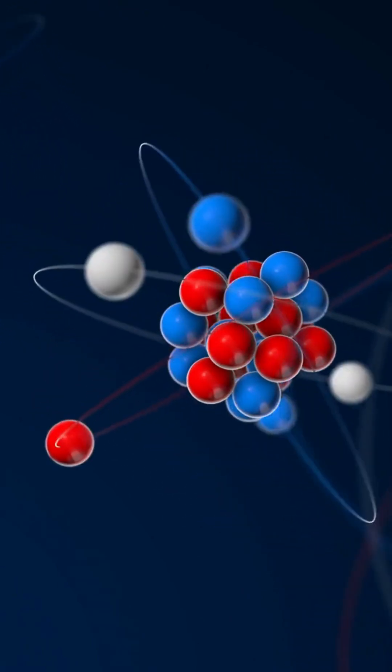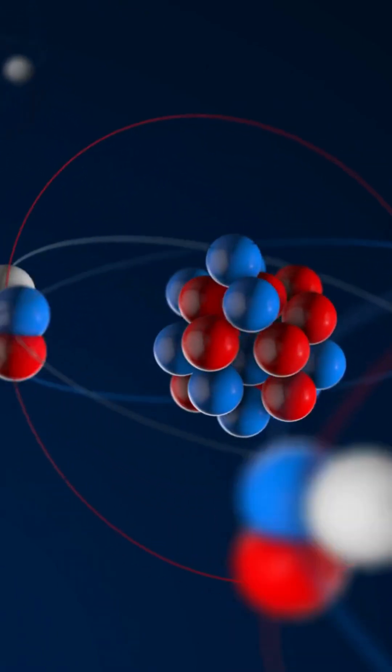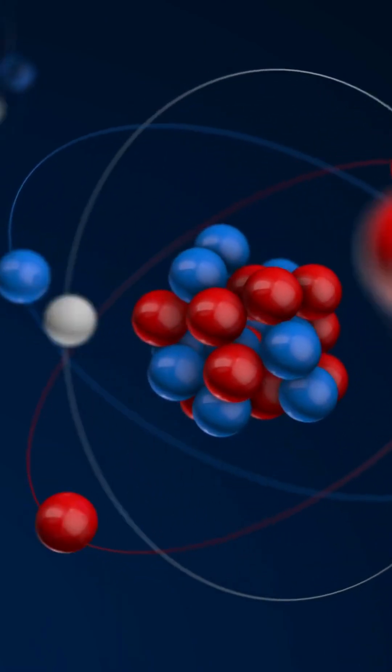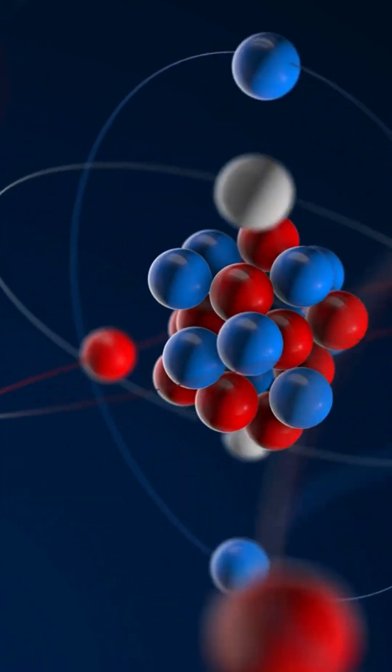Electrons in the outermost shell, known as valence electrons, play a crucial role in determining the chemical properties and reactivity of an atom.